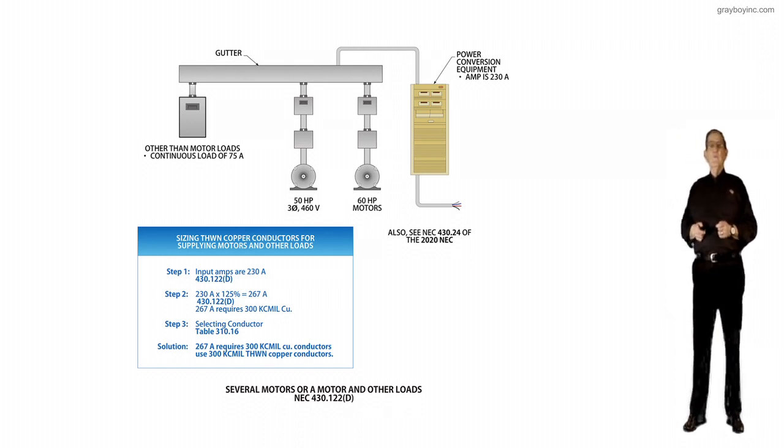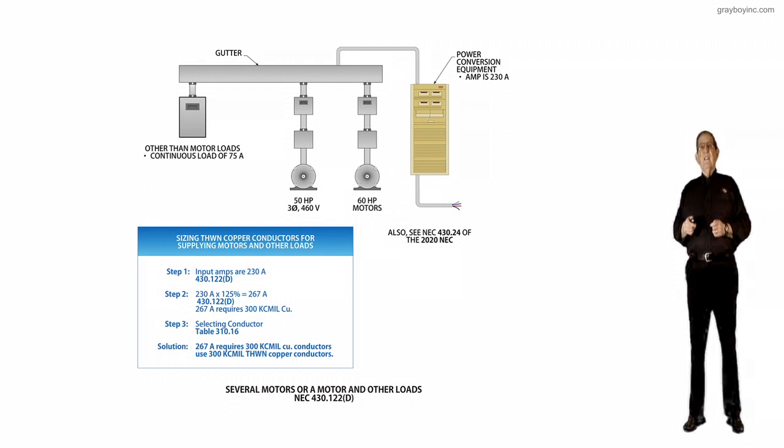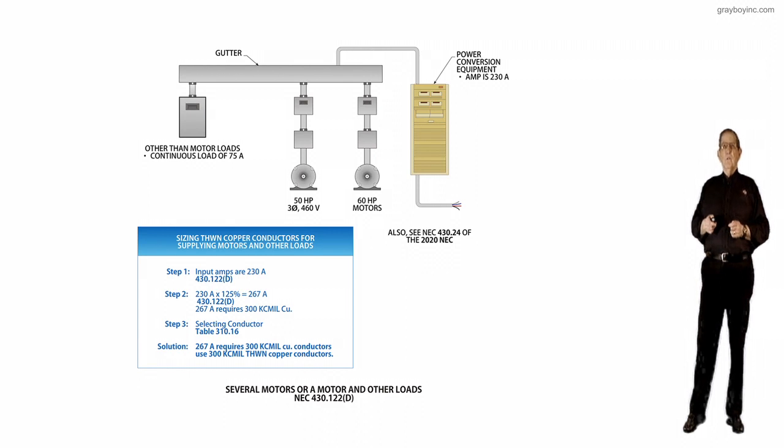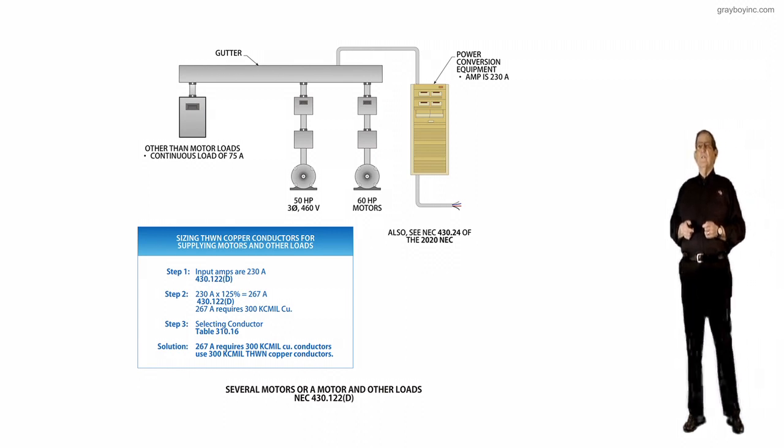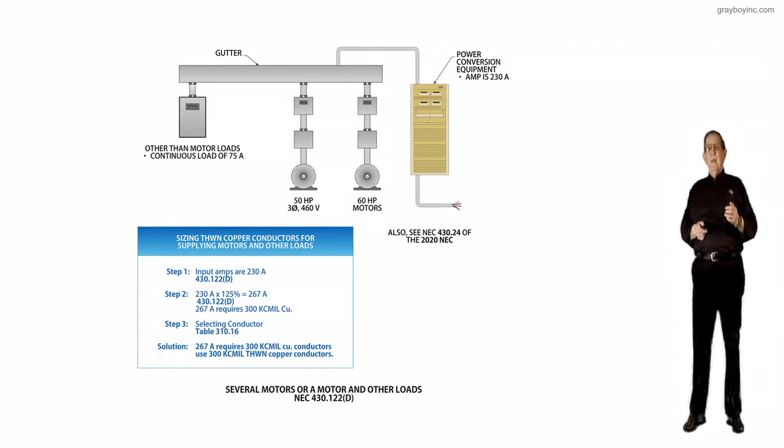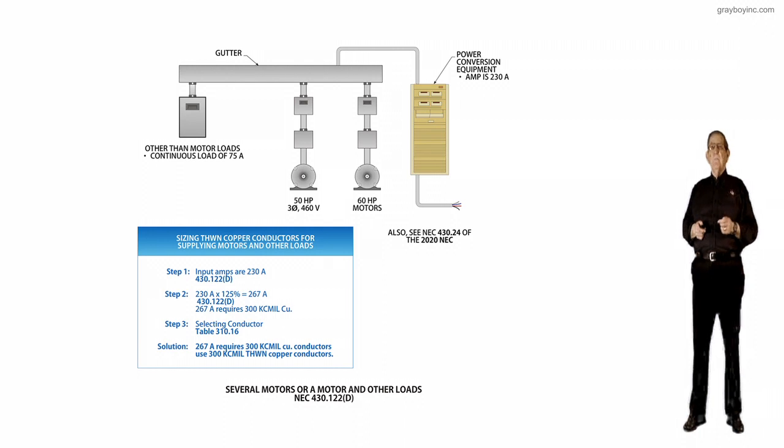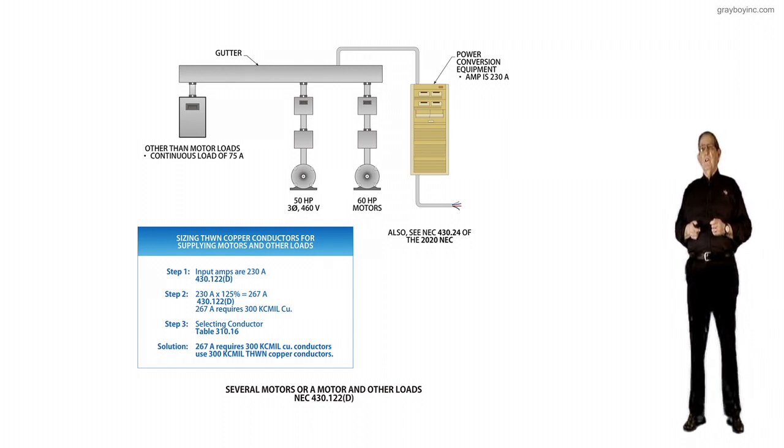And then of course secondly in the panel board, we have other loads on this feeder over to the auxiliary gutter. Other than motor loads and a continuous load of 75 amps, meaning it can operate for three hours or more as defined for continuous duty in article 100.